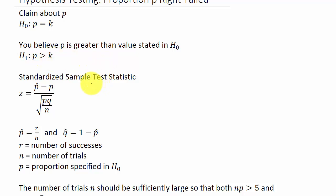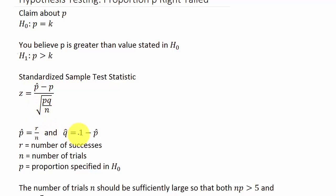We need our sample test statistic, and that'll be Z. Z equals P-hat minus P, over the square root of P times Q over N. Where P-hat is R over N, and Q-hat is 1 minus P-hat.